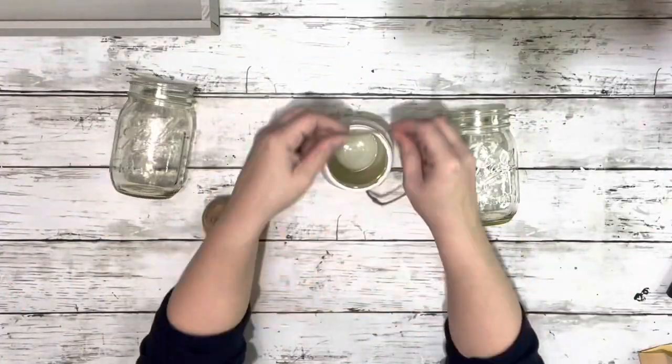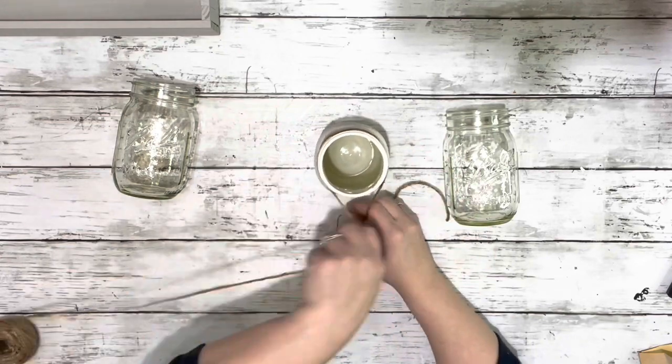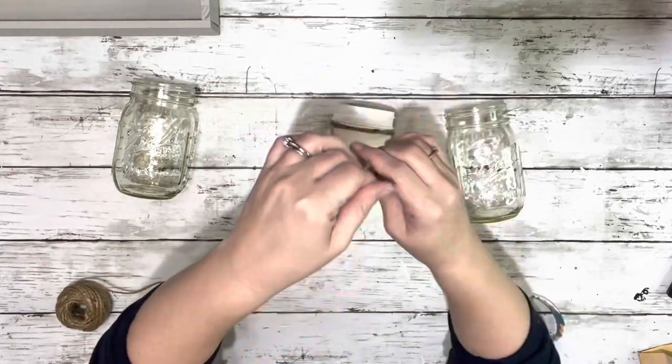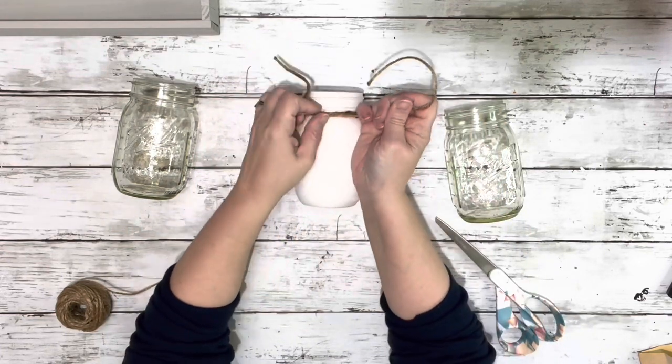And then once that was done, I took the mason jars and some of the twine, wrapped the twine around a couple times, and then just tied it in a little bow. And I did that on all three of those.